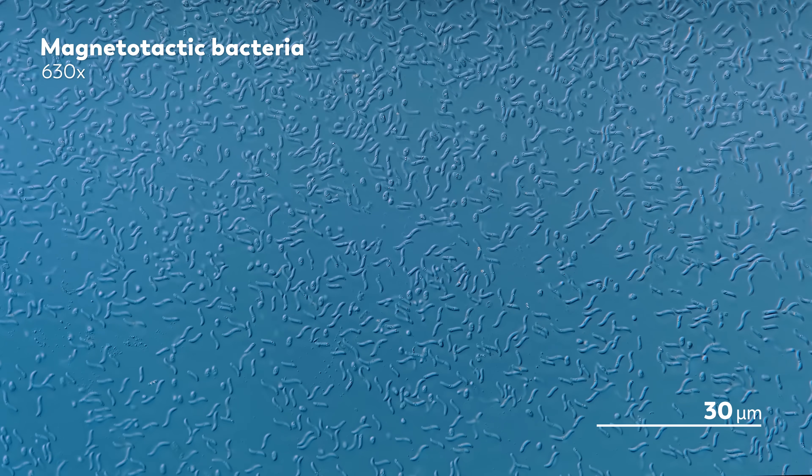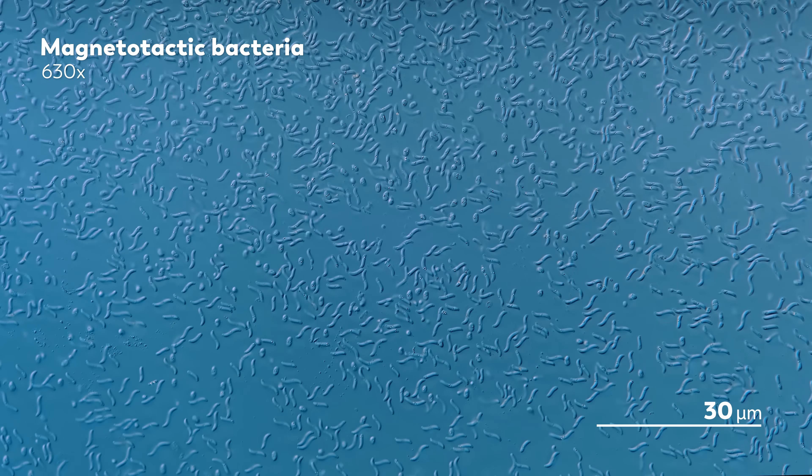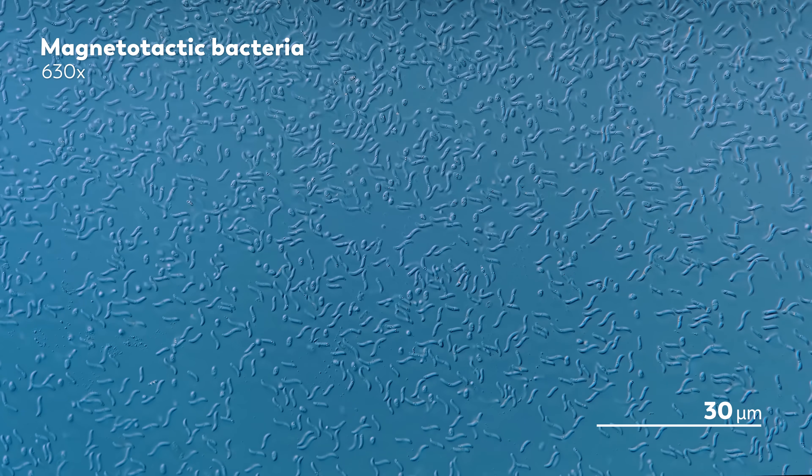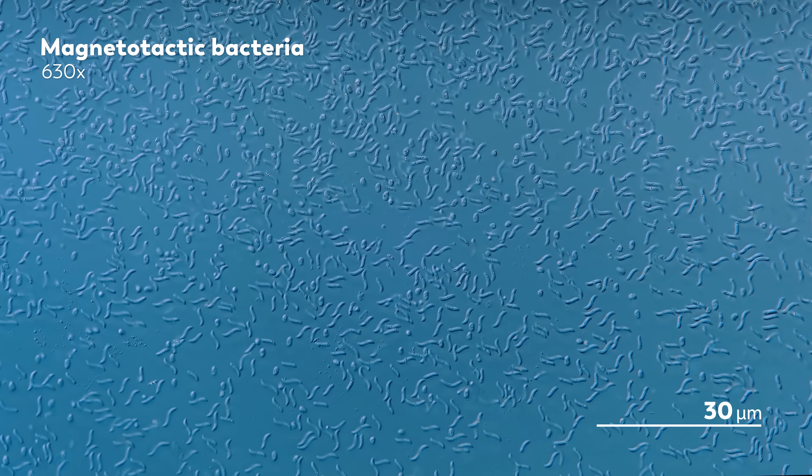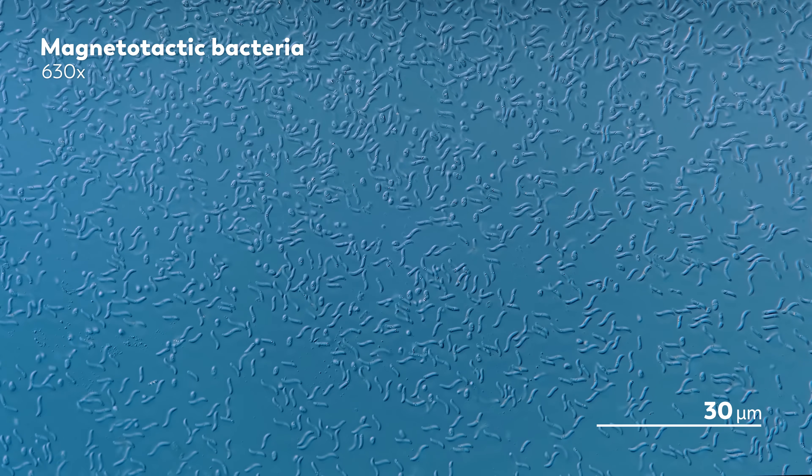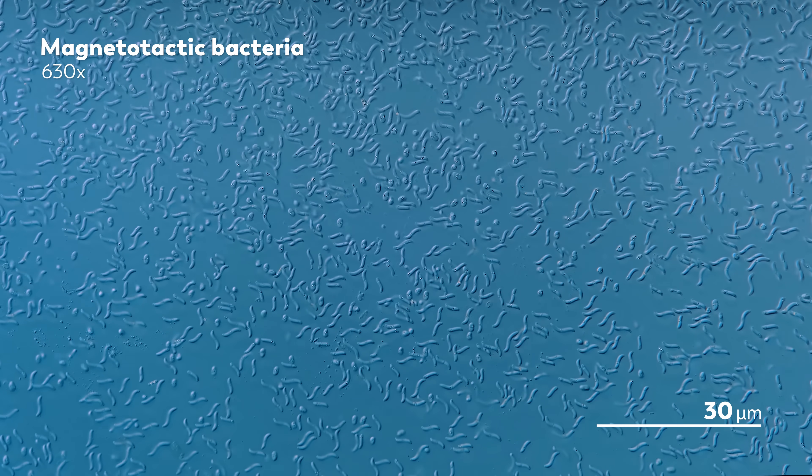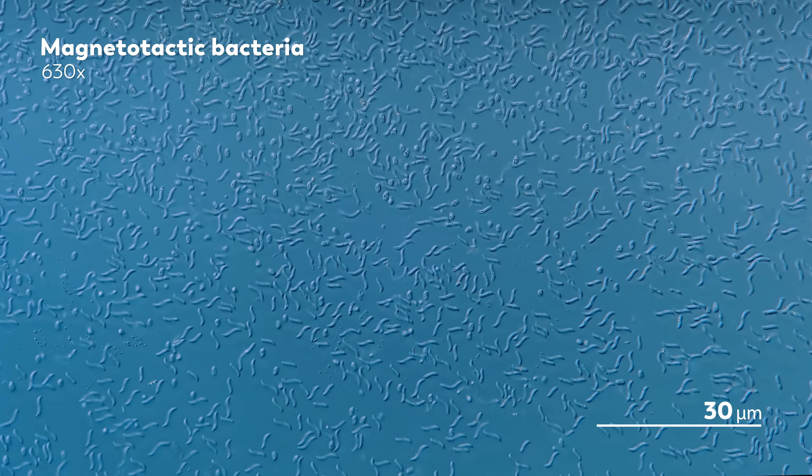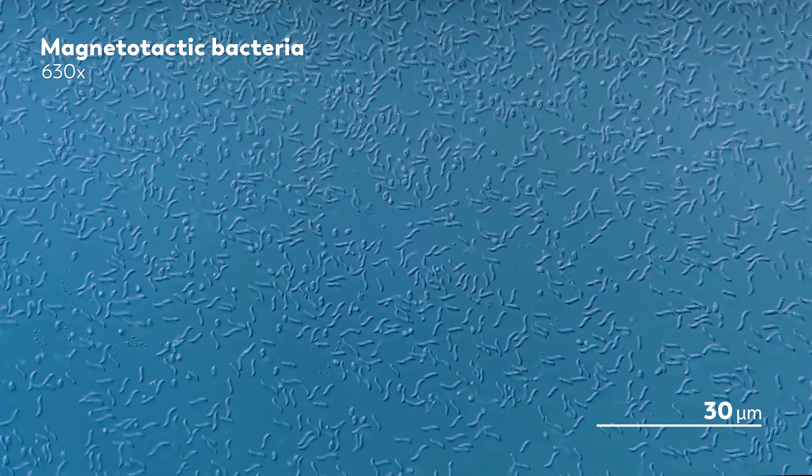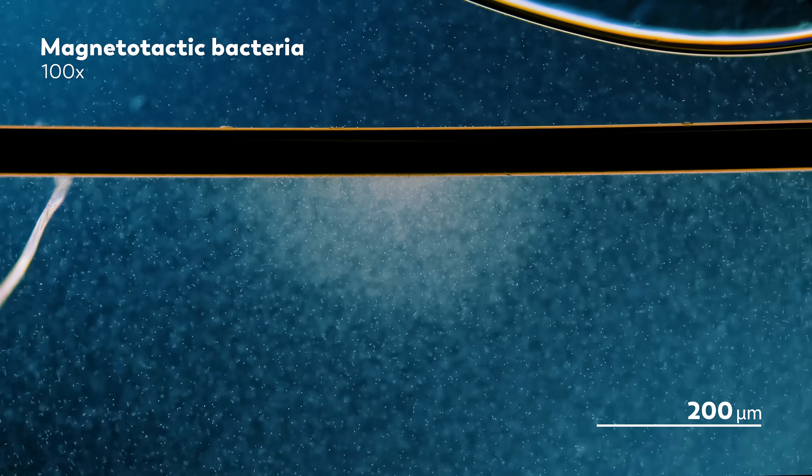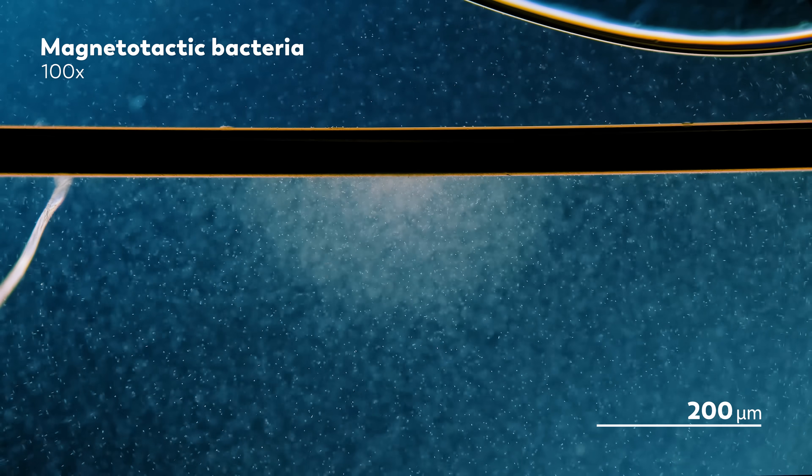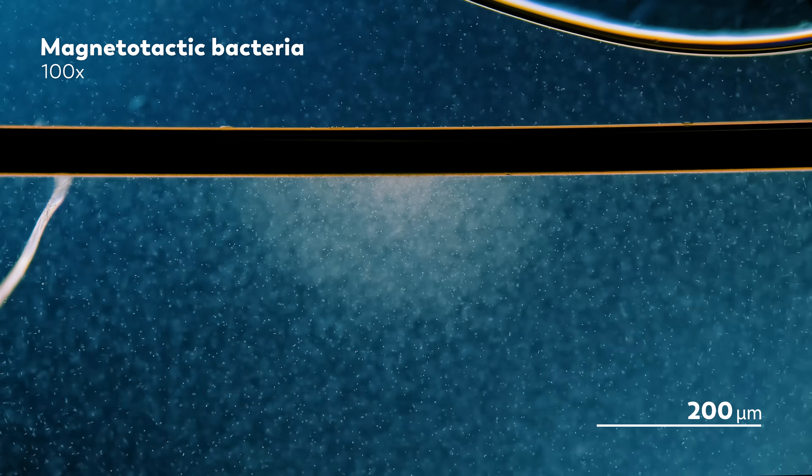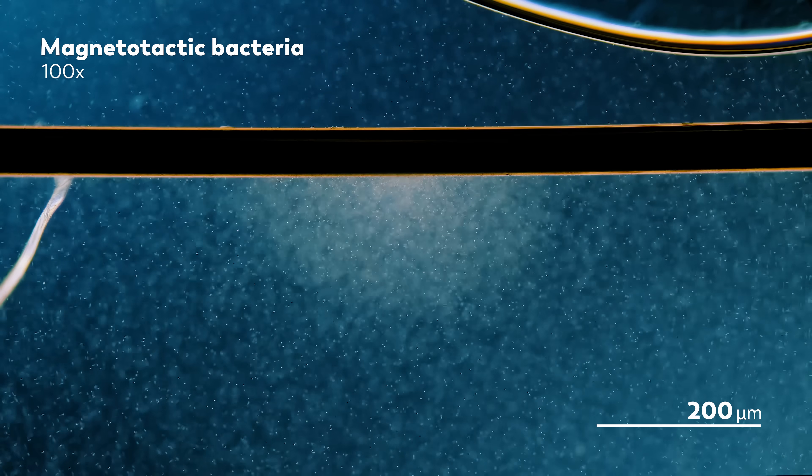Magnetotactic bacteria are found all around the world, but their preference is to live in areas with low levels of oxygen, like deeper down towards the sediment and away from the surface. And this preference has potentially important consequences for the direction that magnetotactic bacteria travel in. All of the magnetotactic bacteria discoveries we have described so far, including the bacteria we've been watching, travel north.